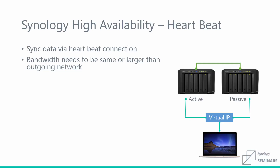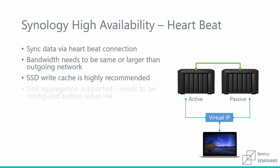If you have a gigabit connection in your environment, implementing 10 gig is still a great way to make sure you don't have any performance issues through that heartbeat connection. Another thing that can greatly boost performance is using SSDs — whether filling your device entirely with SSDs for an all-flash array, or implementing a read-write SSD cache for hot data. You can also increase performance with link aggregation, using multiple ports on the back of the device to boost network performance. It's important to note that link aggregation needs to be set up before the two units are linked together in high availability.